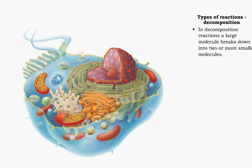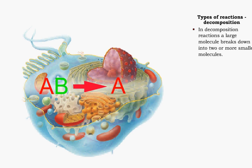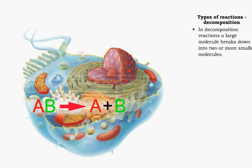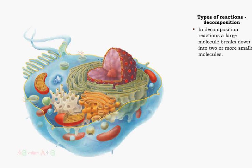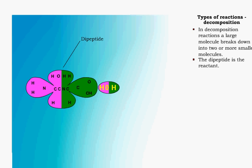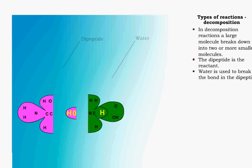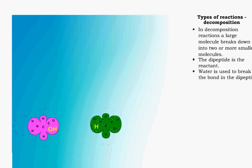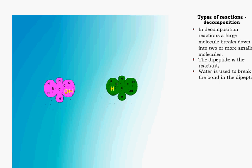A large molecule breaks down into two or more smaller molecules in a decomposition reaction. For example, a dipeptide can be broken down into two amino acids. In this case, water is used to break the bond. This kind of decomposition is called hydrolysis.